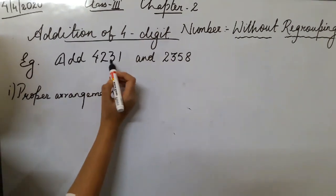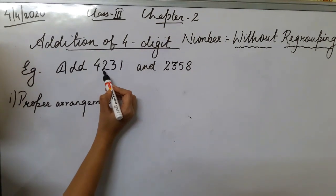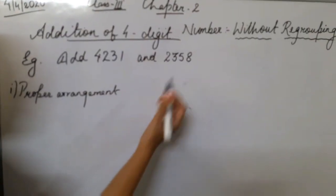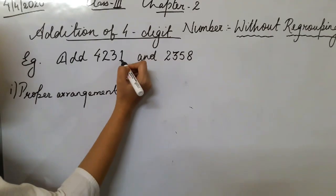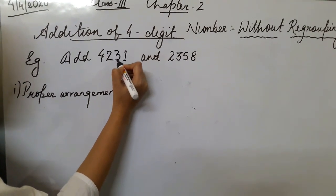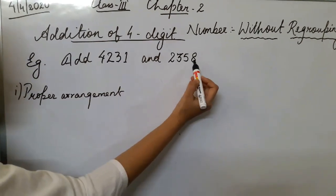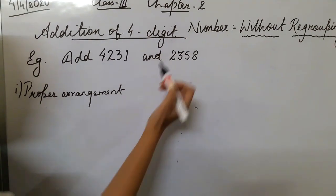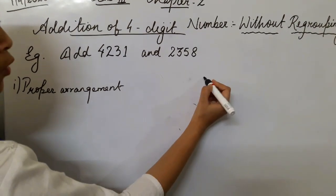So for 4-digit numbers, we arrange them in place value columns: ones, tens, hundreds, thousands. Here 4,231 is arranged so that 1 is in the ones column, 3 in tens, 2 in hundreds, 4 in thousands. Similarly, 2,358 has 8 in ones, 5 in tens, 3 in hundreds, and 2 in thousands. The proper arrangement is in place.